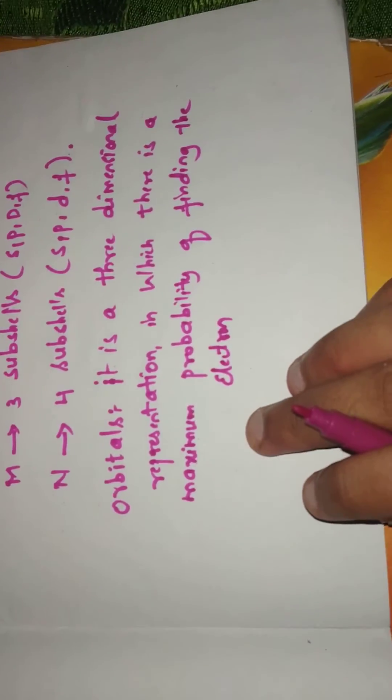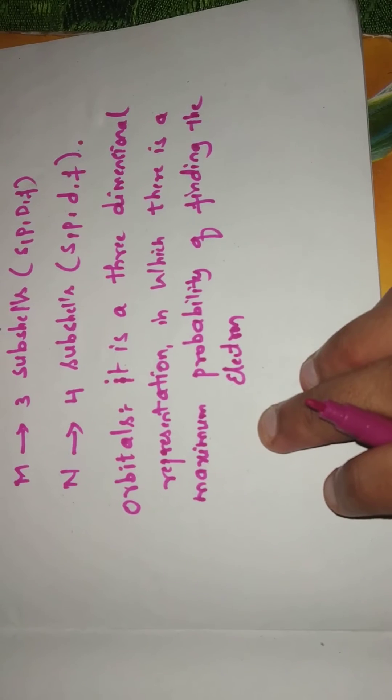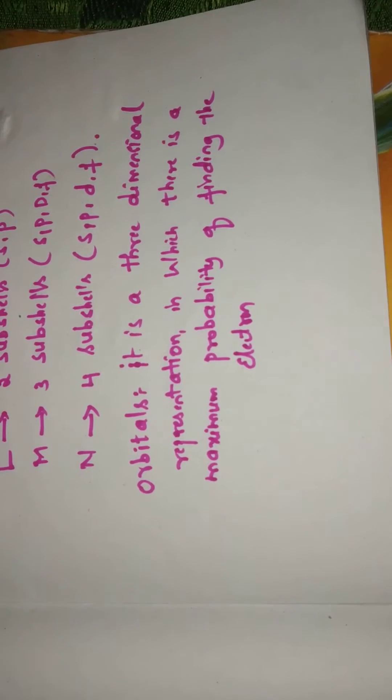When the Schrödinger wave equation was solved for hydrogen atom, the maximum probability of finding the electron is found to be spherical. Thus, hydrogen has a spherical shape.